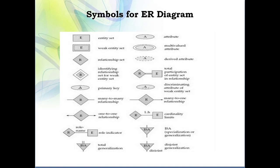To summarize, in this lecture we discussed three main topics of ER diagrams: what is an entity, what is a relationship, and what are attributes along with their types. We also discussed the four types of relationships — one-to-one, one-to-many, many-to-one, and many-to-many — and the various symbols used while drawing an ER diagram. The remaining part of the ER diagram topic will be discussed in the next lecture. Thank you.